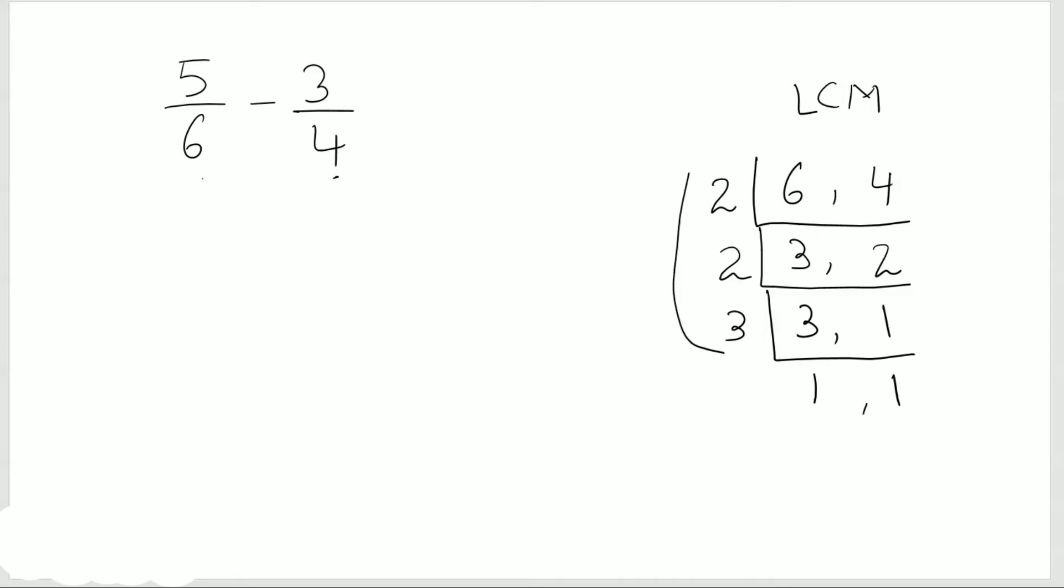So multiply all these numbers: 2 times 2 times 3 is 12. And this is my LCM.